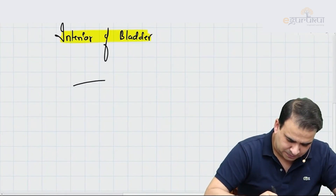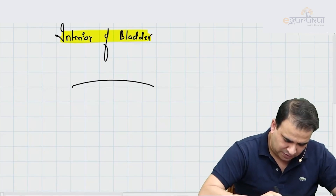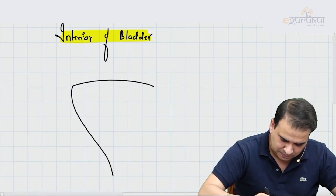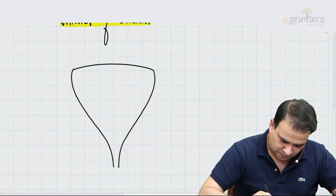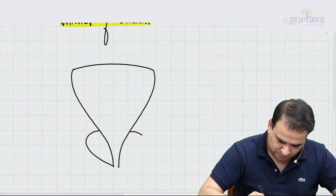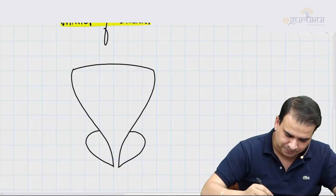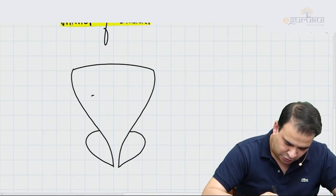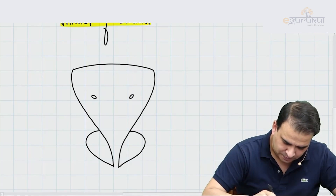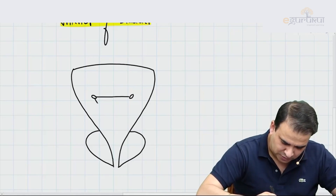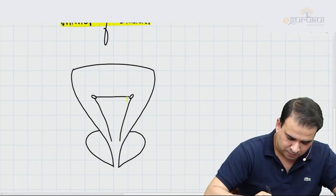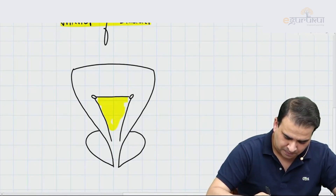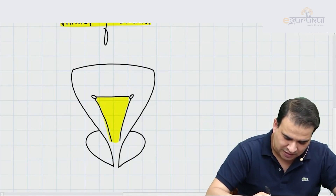This is the interior of the bladder. Let us presume that is a prostate gland. Here are the openings of the ureter, and that of course is the trigone. There are four or five important questions that can be asked from the interior of the bladder.